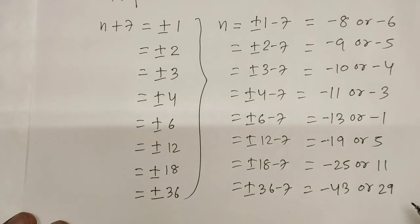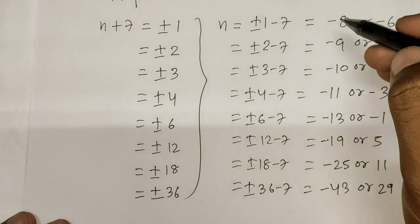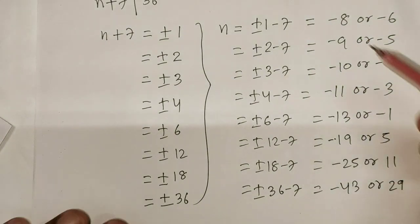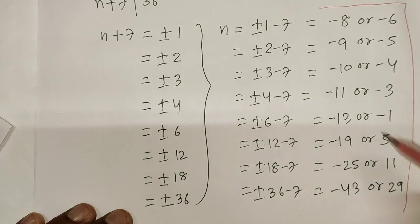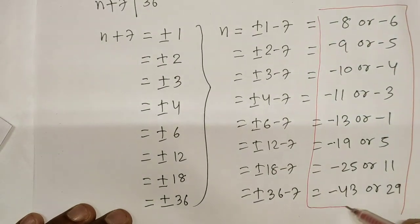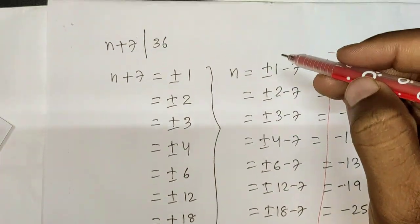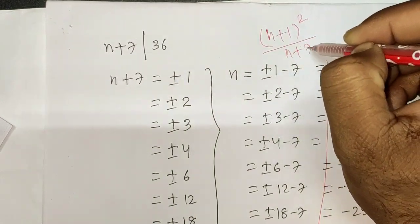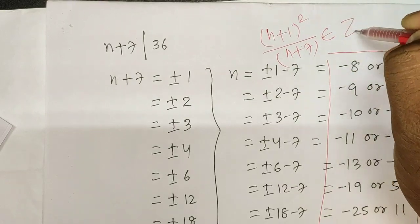So finally we have this bunch of values for n. For these many values of n, the expression (n+1)²/(n+7) is an integer.